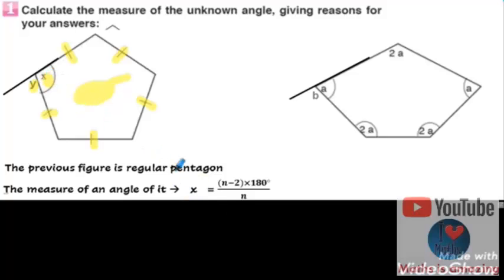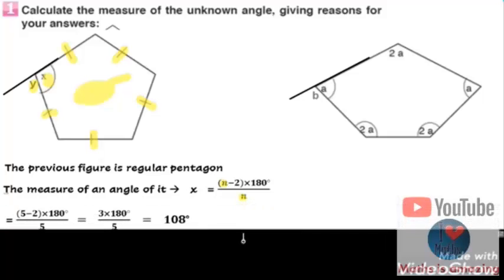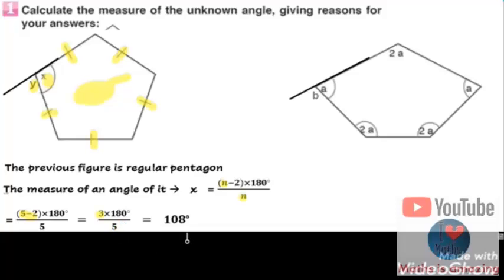To find the measure of an angle denoted by x: (n - 2) times 180 divided by n. And n here equals 5 because it's a pentagon with 5 sides. Then we substitute n by 5: (5 - 2) times 180 all divided by 5. 5 minus 2 equals 3, 3 times 180 divided by 5 equals 108 degrees.